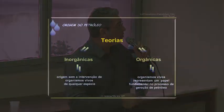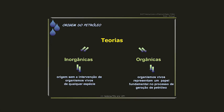Existem grupos de teorias que tentam explicar a origem do petróleo. A origem do carvão é muito bem conhecida, pois a matéria orgânica vegetal é bem explícita. No caso do petróleo, temos dois grupos de teorias: as teorias inorgânicas — sem a intervenção de organismos vivos — e as orgânicas — com a intervenção de organismos vivos.